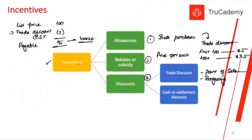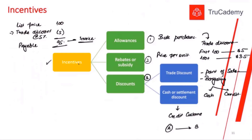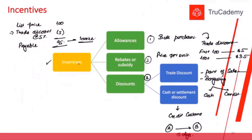Remember that trade discount can be given for cash or credit transactions. But cash or settlement discount is only given to credit customers. For example, customer A walks into supplier B's shop, may receive a trade discount, and they agree on a credit period of 15 days — the customer can buy goods today but must pay within 15 days.